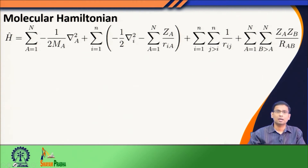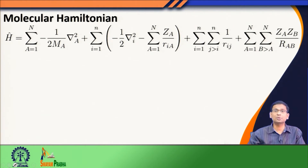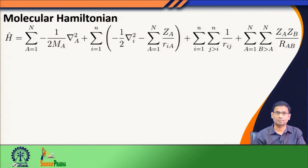For example, each nucleus in the molecule will contribute one nuclear kinetic energy operator, each electron will contribute one electron kinetic energy operator. Electrons and nuclei will have attractive interaction between them, plus electron-electron repulsion, and finally the nuclear-nuclear repulsion. You can see the Hamiltonian that we have written down here contains all these terms.